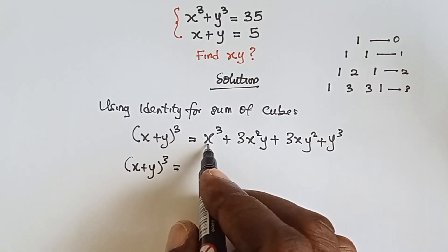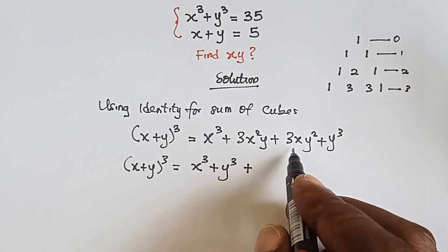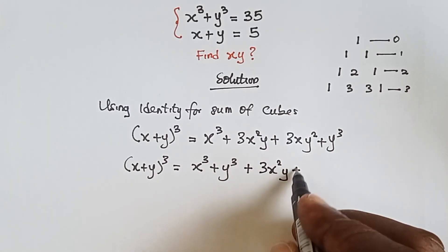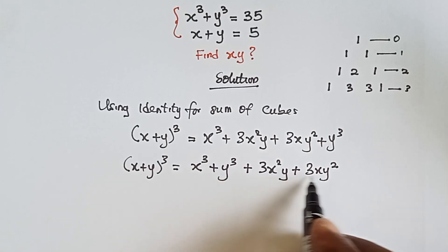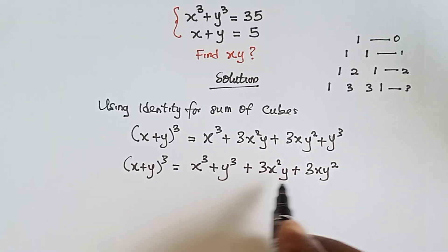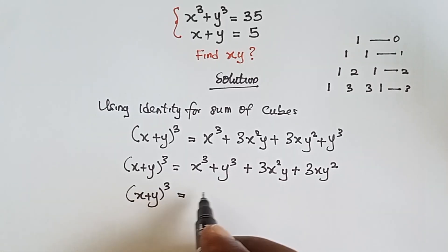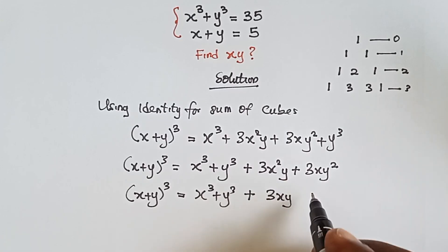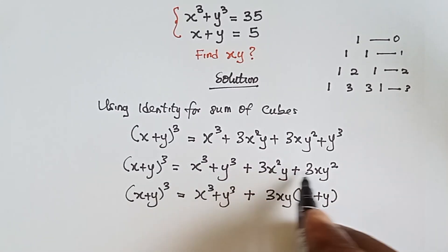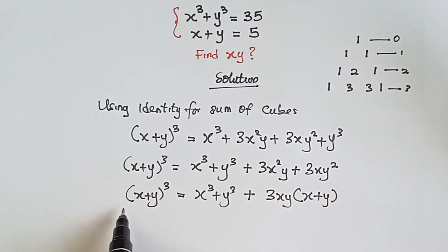So x plus y cubed equals x cubed plus y cubed plus 3x squared y plus 3xy squared. We can factorize the last two terms — 3xy is common, giving 3xy times (x plus y). Expanding that bracket: 3xy times x gives 3x squared y, and 3xy times y gives 3xy squared.